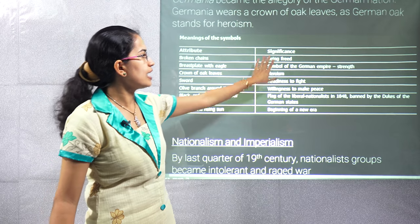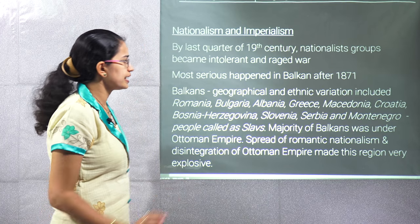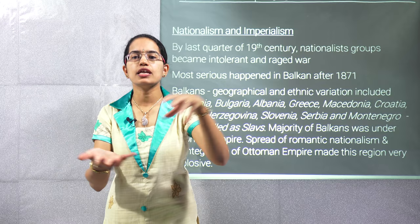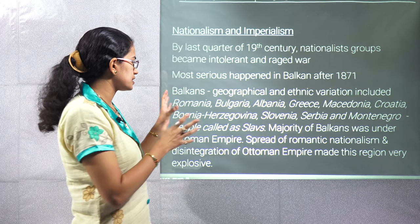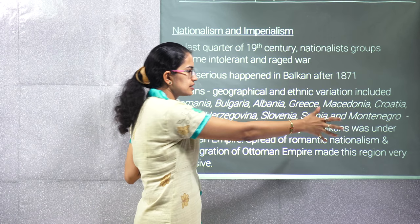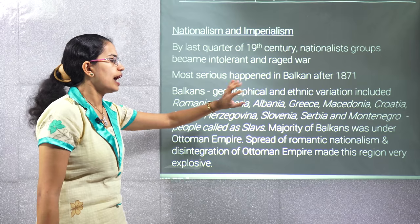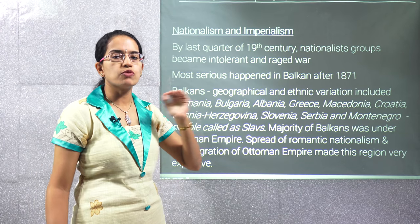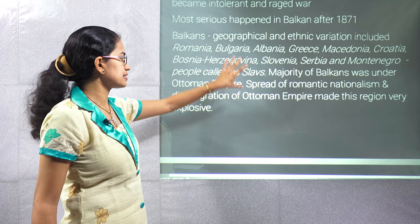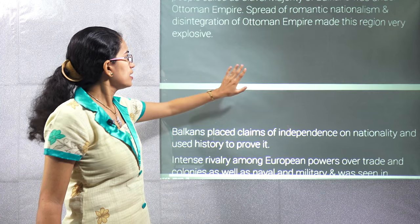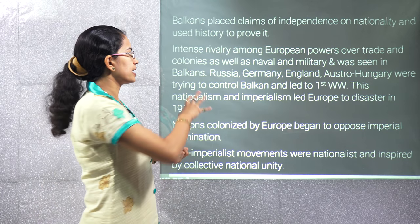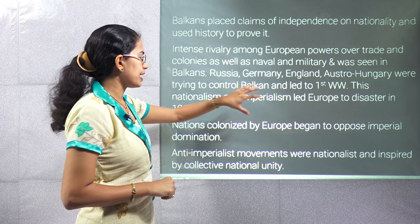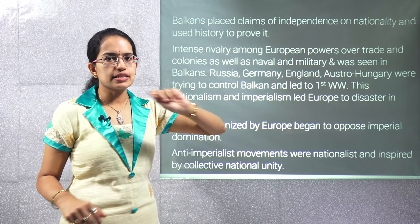The Balkans was a region where every nation had its eye. This region was formed by Romania, Bulgaria, Albania, Greece, Croatia, Bosnia, Slovenia and others. The people here were known as Slavs. Most of the Balkans during that time was under the Ottoman Empire of Turkey. The spread of romantic nationalism and the disintegration of the Ottoman Empire made this region explosive. Each and everyone was trying to control the Balkan area during the First World War. The idea of nationalism and imperialism led this region into disaster. The nations colonised by Europe began to oppose imperialistic ideas, and anti-imperialistic movements started — movements that were mainly nationalist.